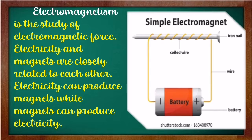What is electromagnetism? Electricity and magnets can produce electromagnetic force. This is a picture of a simple electromagnet. It has parts, as you can see here: coiled wire, iron nail, wire, and battery.